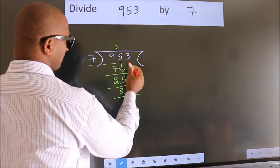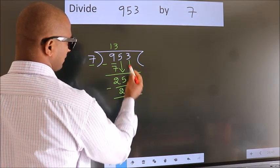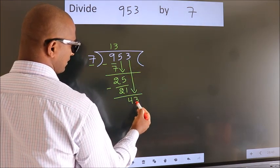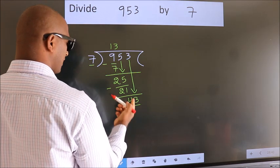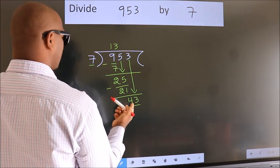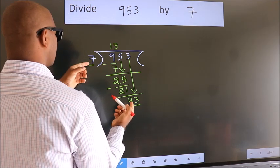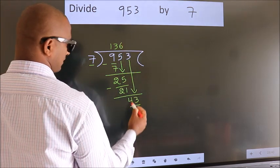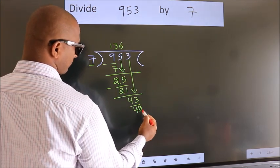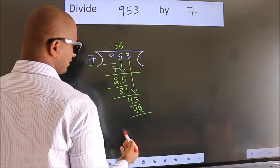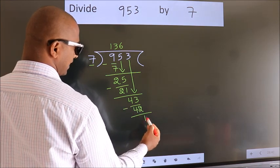After this, bring down the beside number. So, 3 down. So, 43. A number close to 43 in 7 table is 7, 6, 42. Now, we subtract. We get 1.